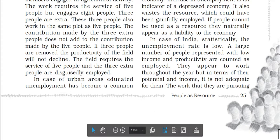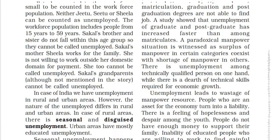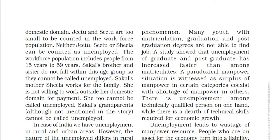In urban areas, educated unemployment is a common phenomenon. It is also referred to as education and unemployment. Urban areas witness a paradoxical manpower situation — a surplus of manpower in certain categories co-existing with a shortage of manpower in others. This includes unemployment of technically qualified persons.